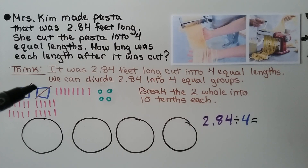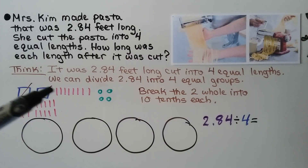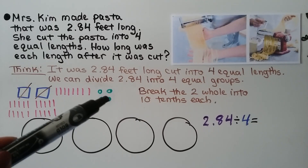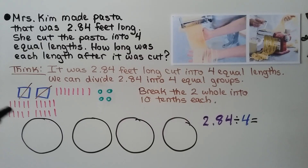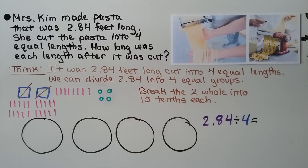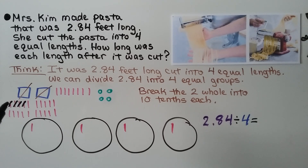We have two whole, eight tenths, and four hundredths. We break the two wholes into ten tenths each, then cross them off because we've regrouped them. We start by putting an equal number into each of the groups — we put one into each group and cross them off so we remember we used them.